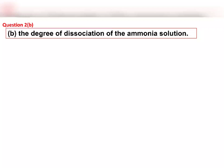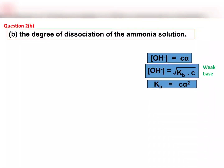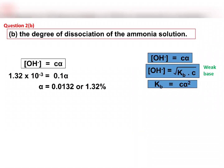For question 2b, we need to determine the degree of dissociation of the ammonia solution. So we need this formula. From the calculations, the degree of dissociation of ammonia solution is 1.32%. That's clear.